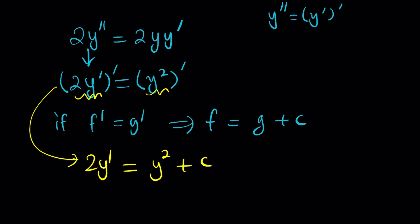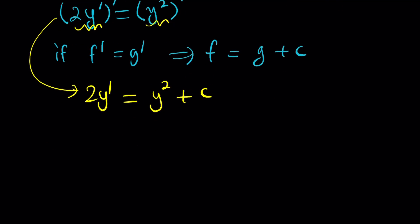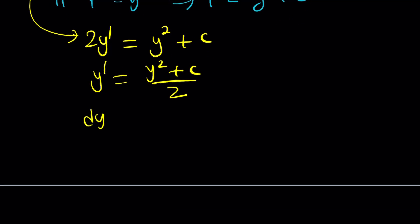This even makes things better because now this will become a separable differential equation, which we're going to go ahead and solve. So, how do we solve it, though? Let's go ahead and, first of all, divide both sides by 2. And then replace y prime with dy over dx.